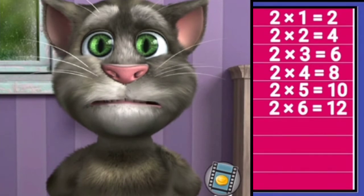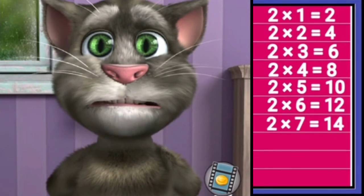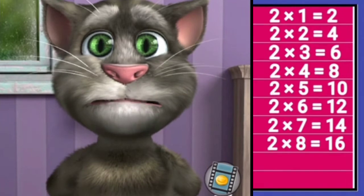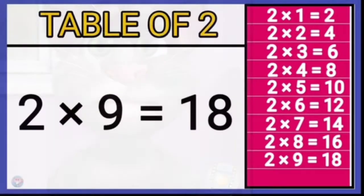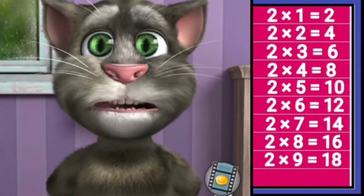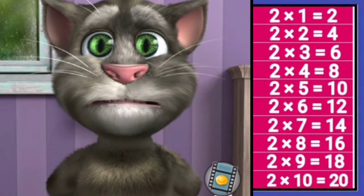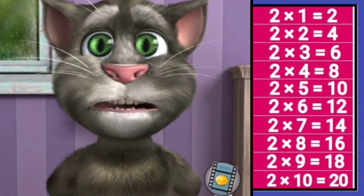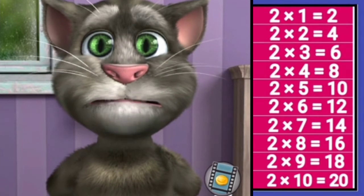Two sixes are twelve, two sevens are fourteen, two eights are sixteen, two nines are eighteen, two tens are twenty.